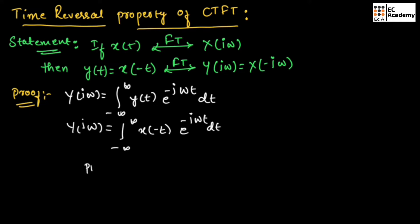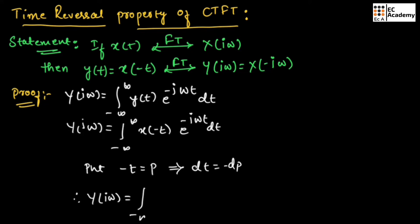Now let us put minus t equal to p. At that case, we can put dt equal to minus dp. Therefore, the above equation becomes Y(jω) equal to the integration from minus infinity to infinity of X(p) exponential to the power of minus jω times minus p, times minus dp.